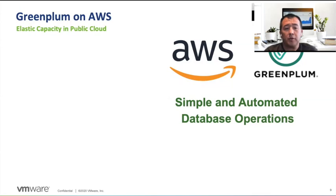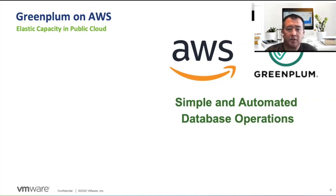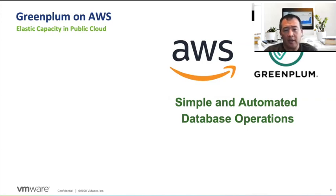Greenplum is the most complete and best data solution across all clouds and on-premise today. Our rich set of features solve for structured, semi-structured, and unstructured datasets. Our big data analytics is built from the ground up with ANSI SQL, and we've layered machine learning on top. On Amazon AWS, Greenplum leverages its elastic capacity in a myriad of ways.